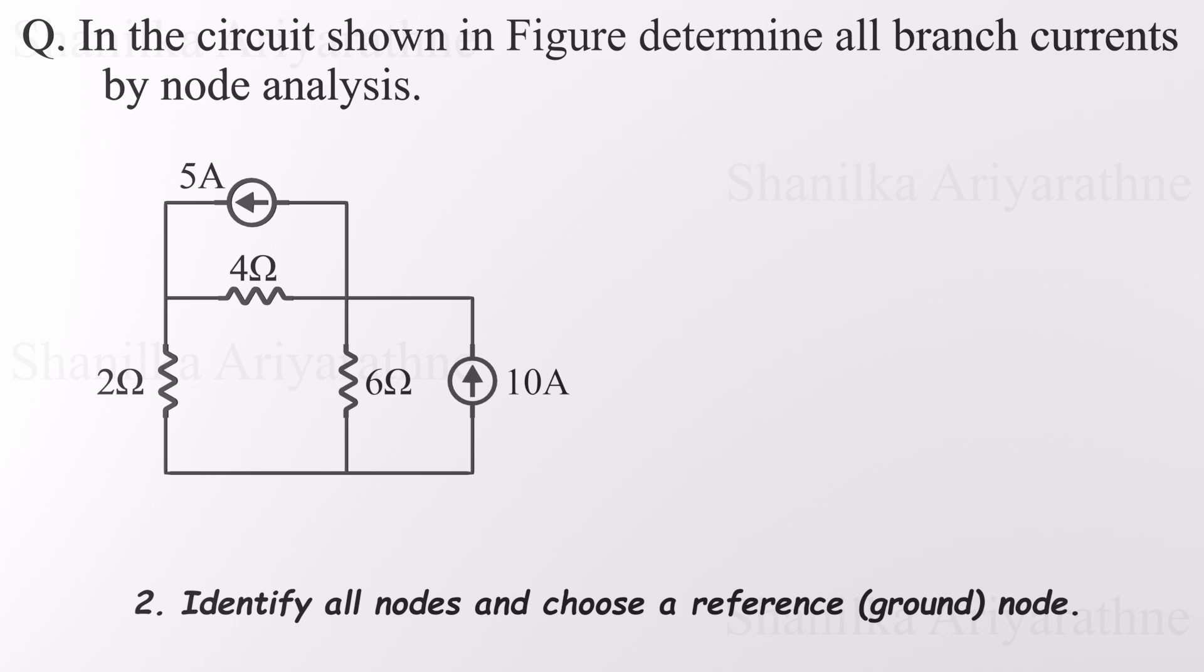Step two is to identify all the relevant nodes in the circuit and pick one to be the reference or ground node. A node is simply a point where two or more elements are connected. And if there's nothing between two connected points, no resistor, no source, they're treated as the same node. Now take a good look at this circuit. How many nodes can you spot? That's right, three.